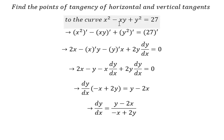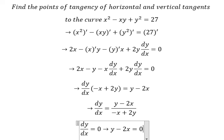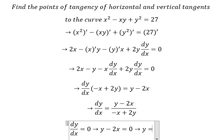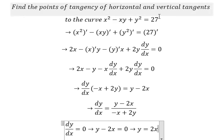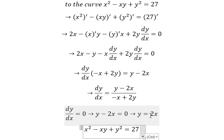For horizontal tangents, we set the numerator equal to zero. That means y minus 2x equals zero, so y equals 2x. Now we substitute this back into the original equation.